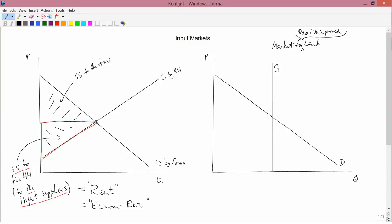Now, in actuality, the price might be really high. But that's because of the demand for land, not because of the supply. The supply of land is fixed. So in the economist's notion of raw, unimproved land, you have a vertical supply curve.